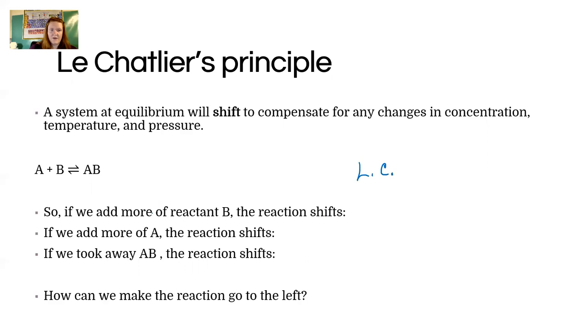If I add more of reactant B, what happens here? If we add more A, what happens here? If we take away some AB, what happens? And finally, how could we make it go left? There's probably a few answers to that question.